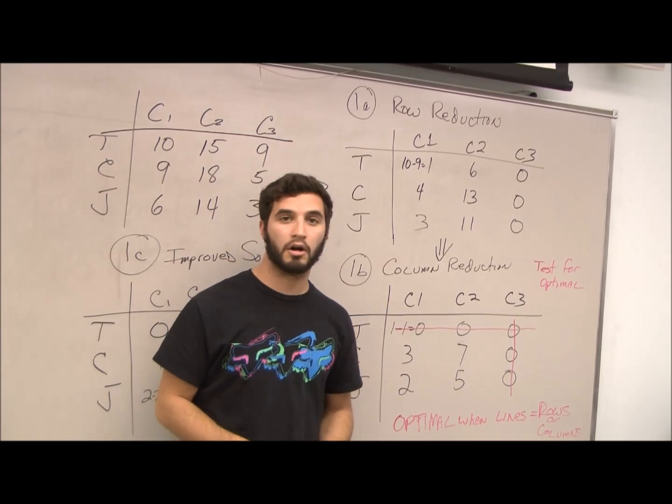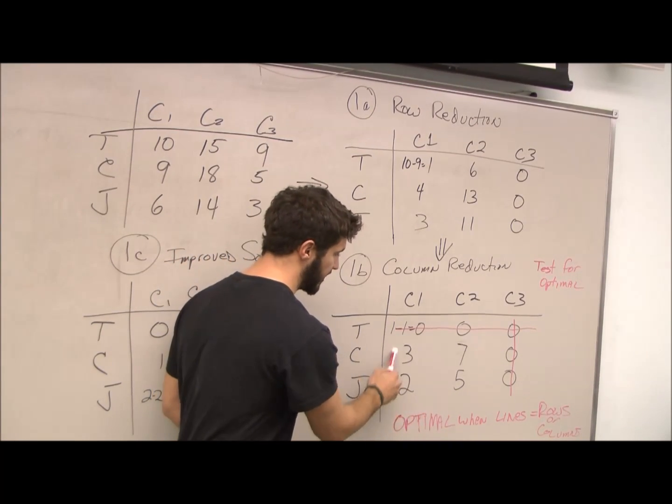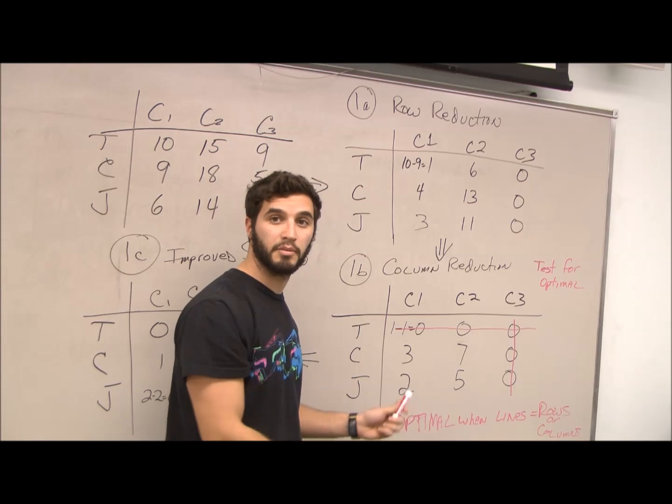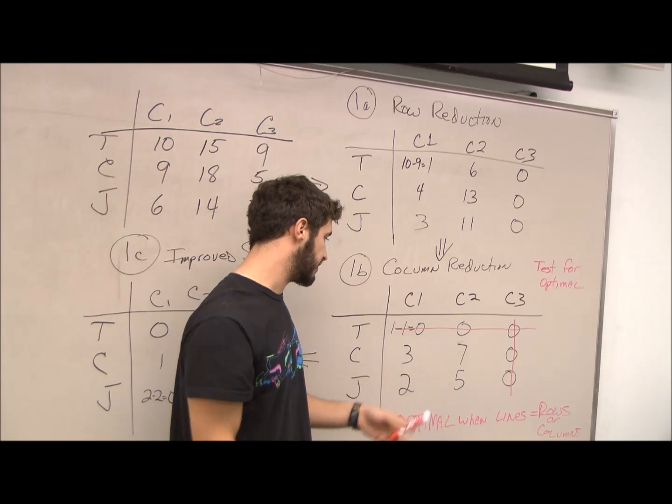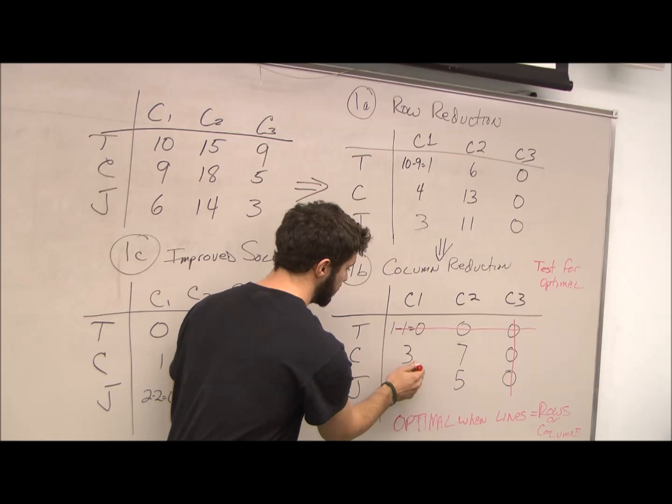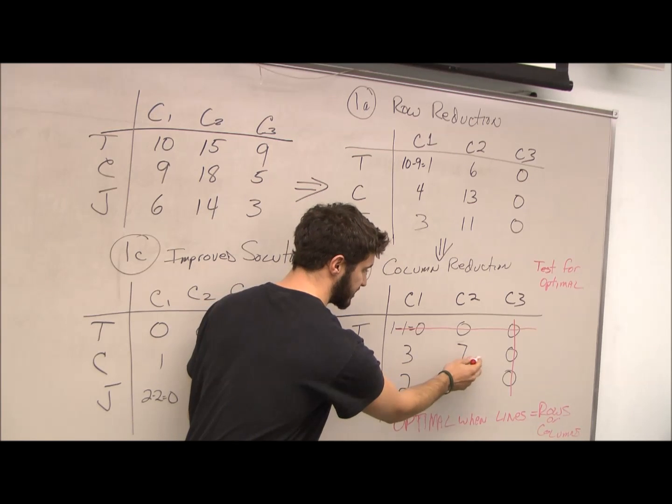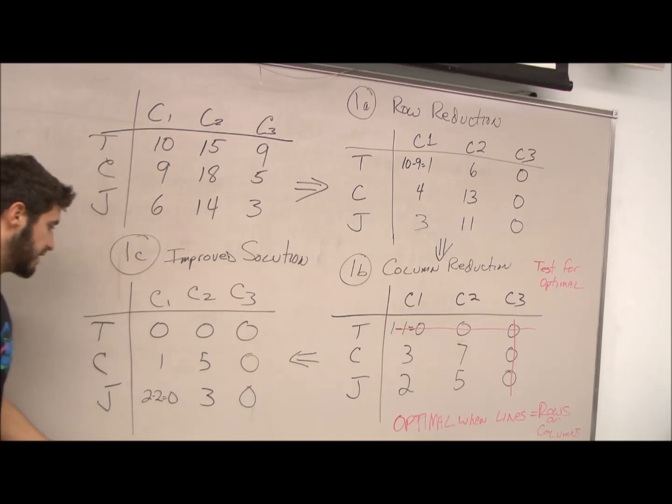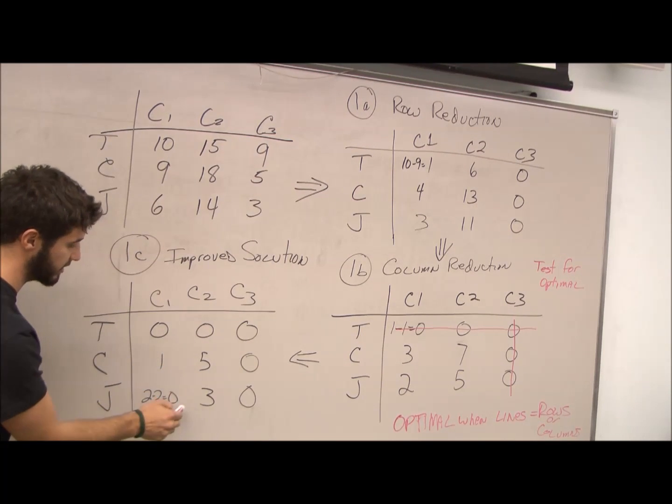So for our improved solution, you take the remaining values that are in the box. You take the minimum value and subtract each value. So 2 by 3, 2 by 2, 2 by 7, and 2 by 5. And as you can see over on this table, that transforms into 1, 5, 3, and 0.